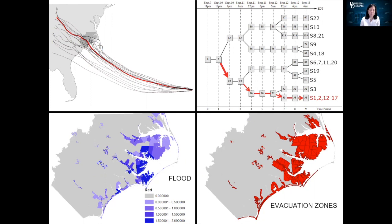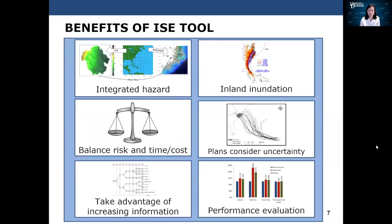This is new information not previously available in other products. The ISE tool offers a number of benefits that aim to support emergency manager decision making. The hazard is treated in an integrated way, so for each scenario we can know how strong winds and flooding co-occur. It captures inland inundation. The plans recommended explicitly balance the competing goals of reducing risk and travel times, account for uncertainty in the hurricane behavior, and take advantage of information increasing through the event.